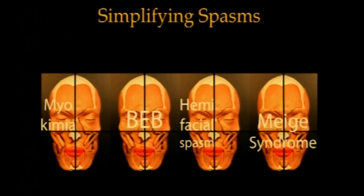When you have a BEB combined with lower facial dystonia — which means practically the entire face — that is called Meige syndrome. This slide should help you diagnose what spasm the patient is suffering from.